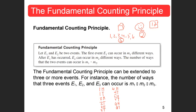The fundamental counting principle says all we have to do is multiply the total number of items in each event, and that will tell us the total sample space. Finding the sample space is pretty important. For example, if I tossed two dice and asked for the probability of getting a sum of 7...